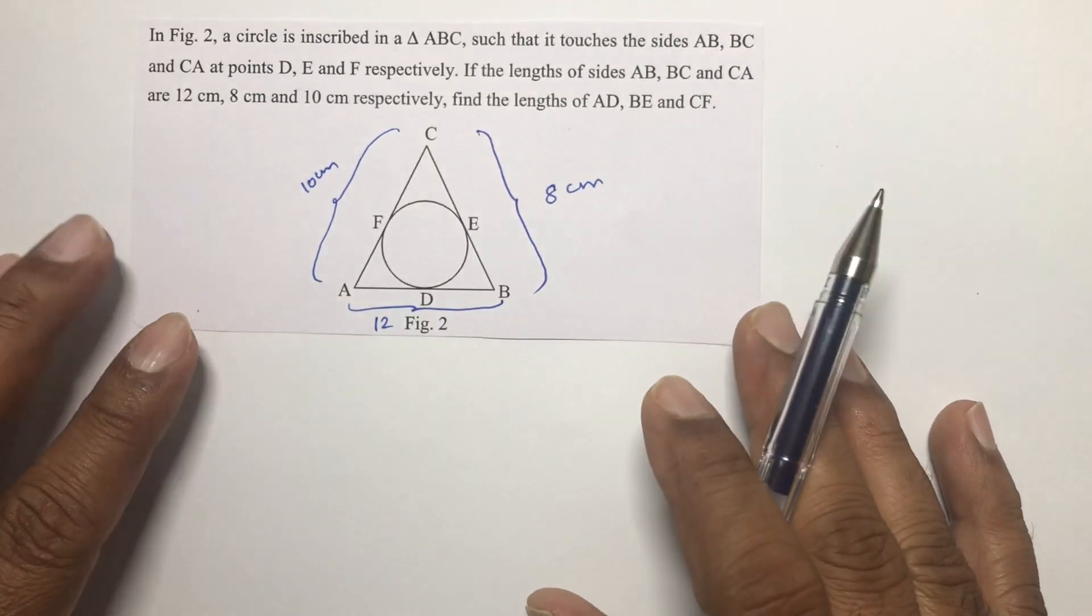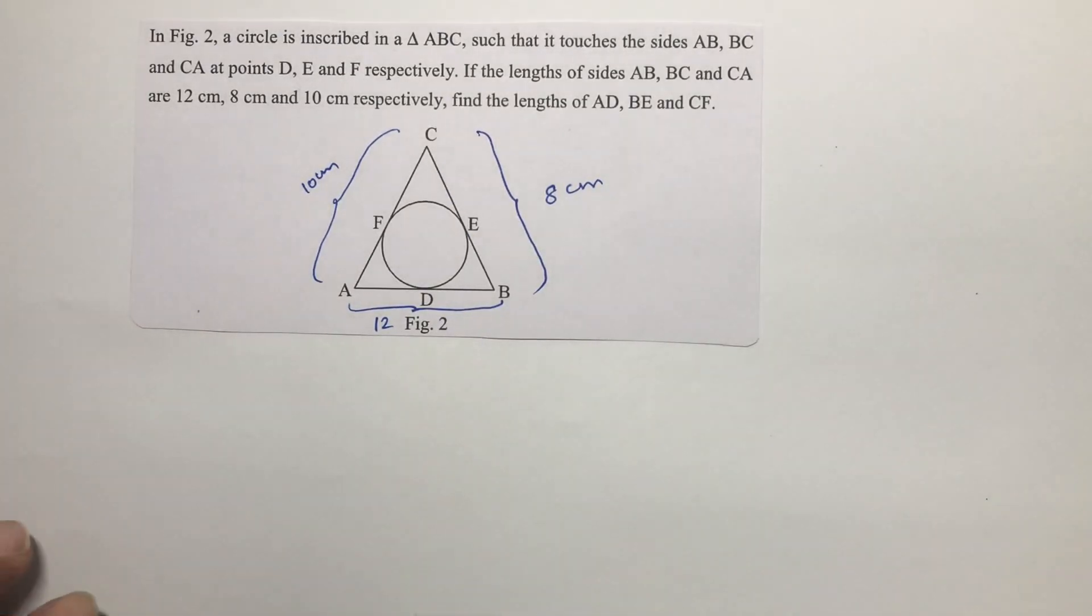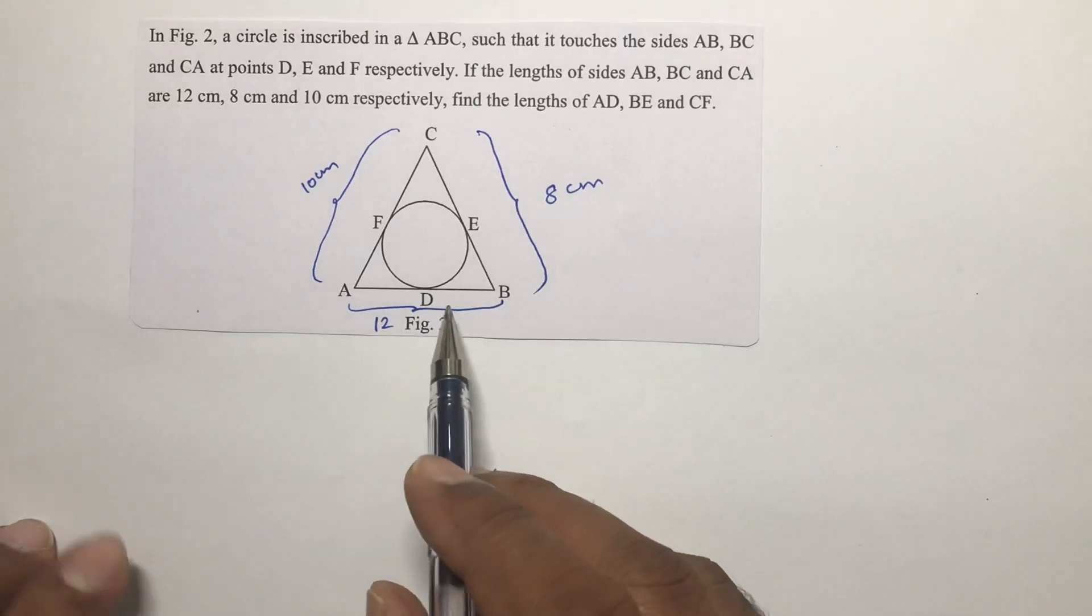Find the length of AD, BE and CF. So we need to find AD, BE and CF.